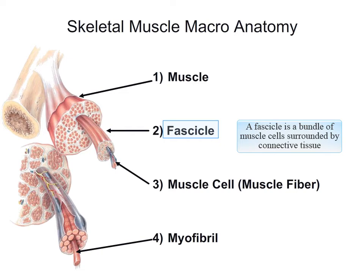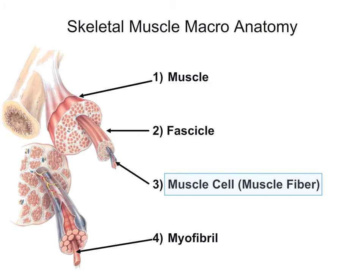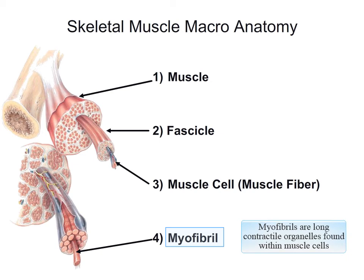Within a fascicle we find individual muscle cells, also called muscle fibers — we call them muscle fibers because skeletal muscle cells can be very long and fibrous. If we zoom in on that muscle cell, we can see it contains other units within it called myofibrils. Myofibrils are specialized organelles found within skeletal muscle, and their job is to contract. Each muscle fiber or cell will contain lots and lots of these long myofibrils.